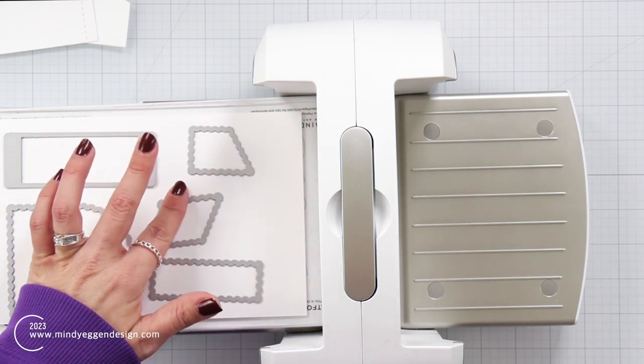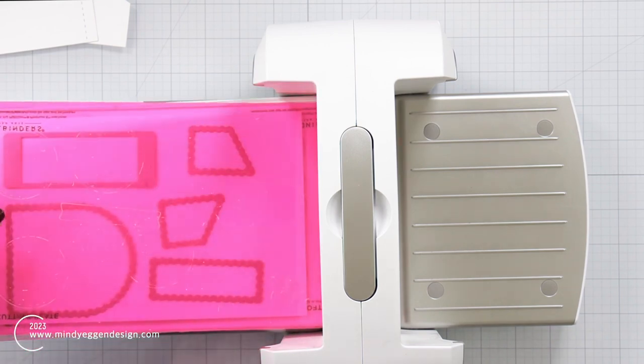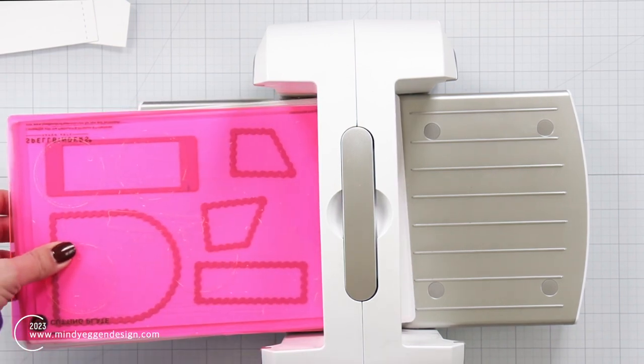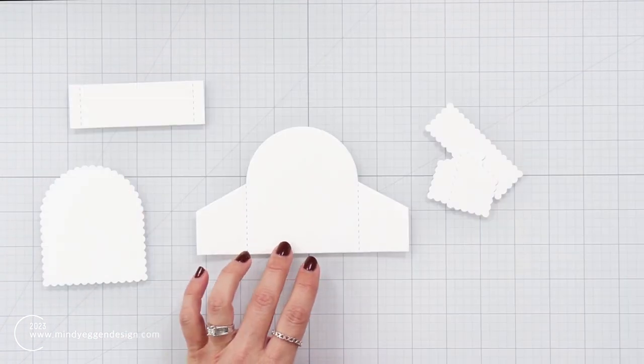Now there's also these scalloped edge pieces. These are what you can use to decorate your box card. You can die cut these from colored cardstock or pattern paper. I'm just going to do some simple ink blending today.